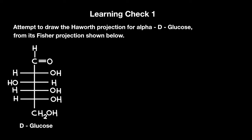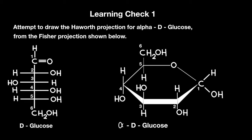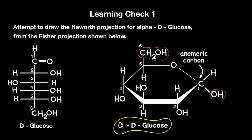Attempt to draw the Haworth projection for alpha-D-glucose from its Fischer projection shown below. This is the Haworth projection for D-glucose. You'll see that the OH on the anomeric carbon is on the opposite side of the ring structure relative to the CH2OH, which makes it alpha-D-glucose. If you've struggled with this question, go back to the steps used to draw D-galactose and more specifically alpha-D-galactose earlier in the video, familiarize yourself with those steps, and then come back and attempt it again.